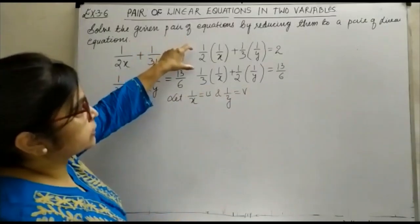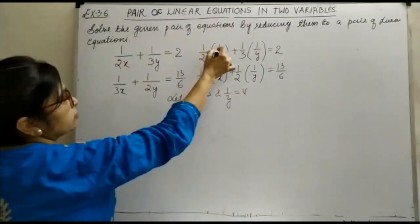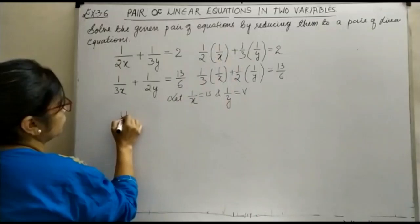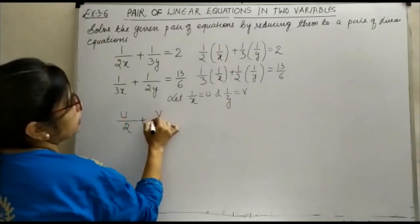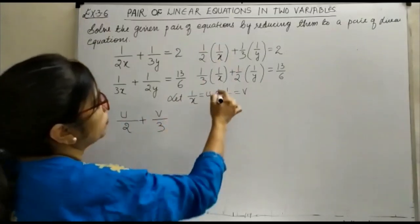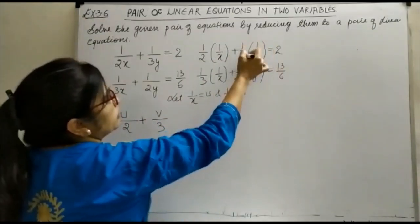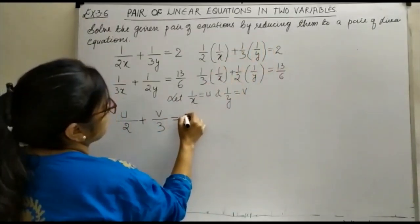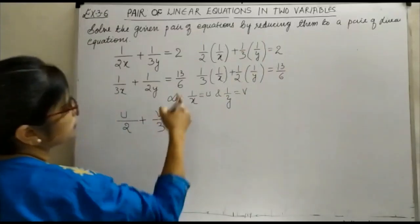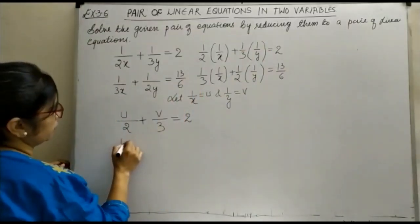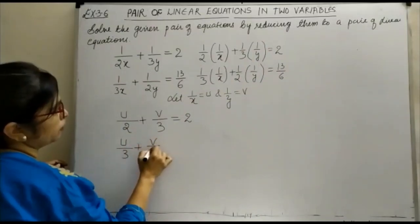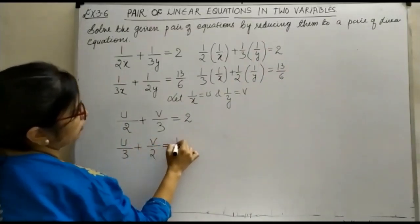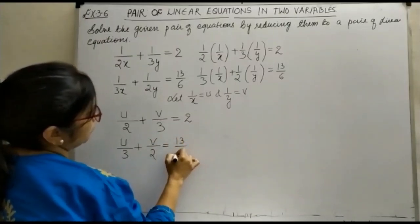Your first equation takes the form, you can see 1 upon x is u, so this becomes u upon 2 plus v upon 3, 1 upon y is equal to v upon 3, so this becomes v upon 3 and this is equal to 2.